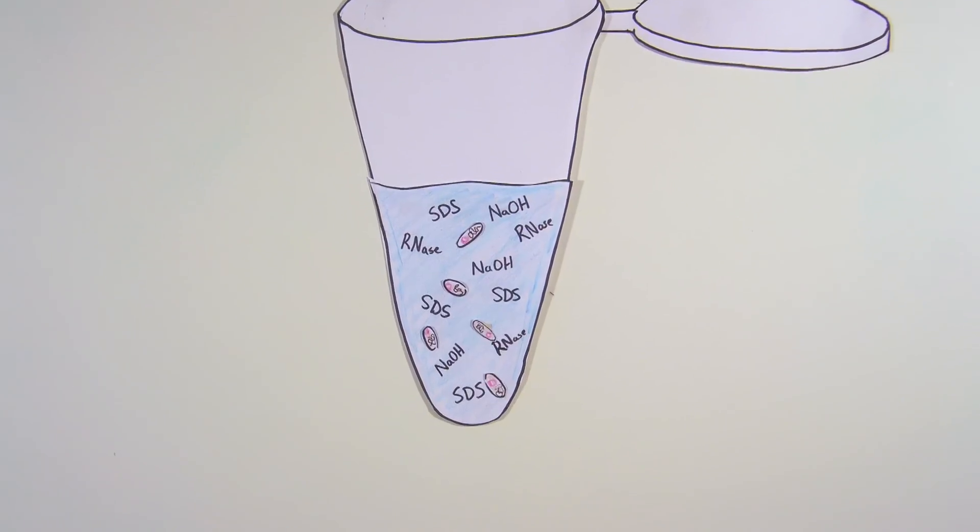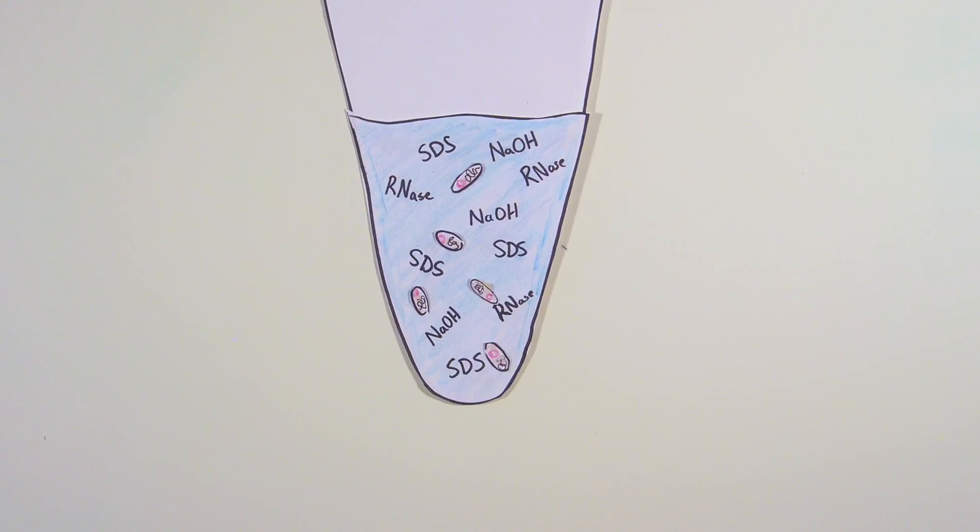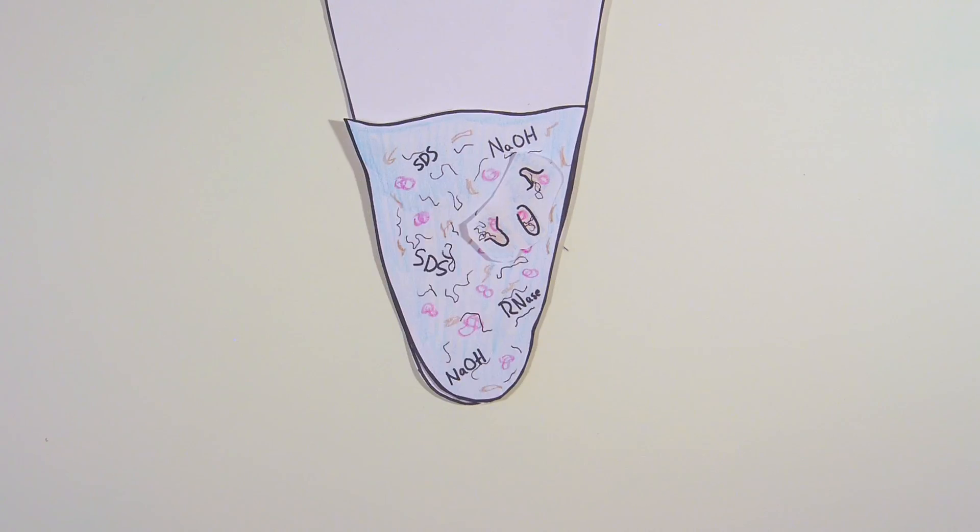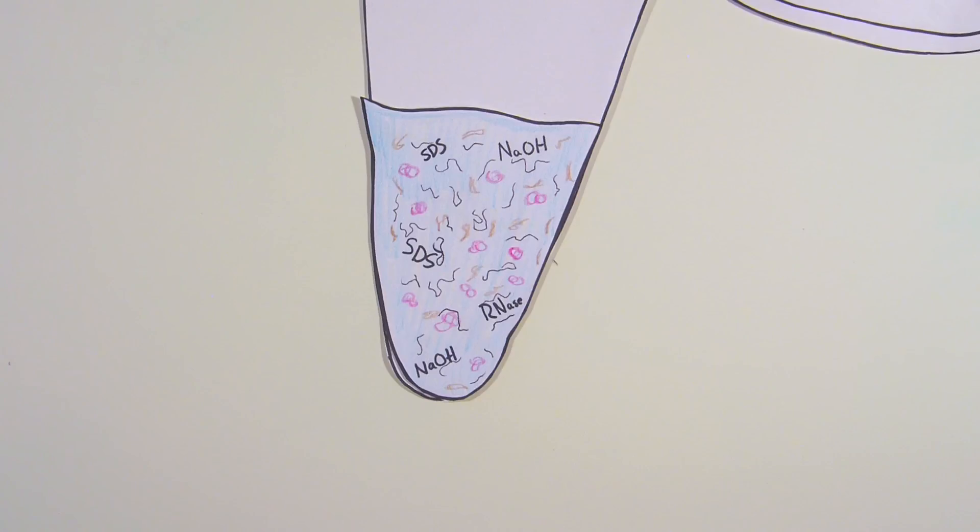The SDS dissociates the lipid components of the cell. The cell membrane, which is made up of lipids, breaks open, or lyses. The contents of the cell, including the cell's chromosomes and plasmid DNA, spill out into the solution. The SDS and high pH of the solution then denature the chromosomal and plasmid DNA.